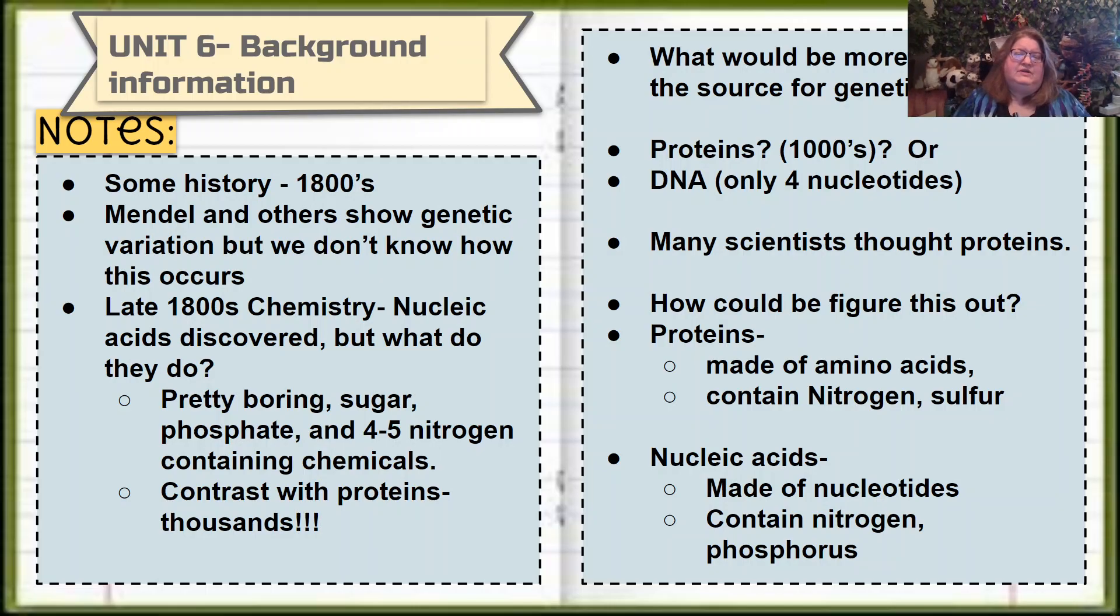When they started to think about what might be the cause of genetic information, they quite naturally presumed that proteins would be a more natural candidate. Proteins, where you have thousands of them, versus DNA, where you only have four nucleotides. Many scientists thought that proteins were the genetic material. Now, one clue to keep in mind for this little story: proteins are made of amino acids. If you recall, back in the beginning of the year, we learned this. Proteins are made of amino acids, and amino acids have nitrogen and sulfur, but notice they don't have any phosphorus.